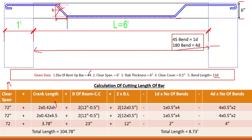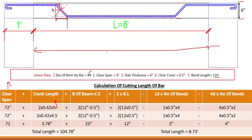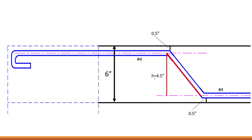It is very important to understand what H is. H is basically the depth of the crank — from the center of the bar at the bottom up to the center of the bar at the top. To find H, we take the slab thickness and subtract the concrete cover at each end, then subtract the full bar diameter (half at each end adds up to one full dia). So H equals 4.5 inches.